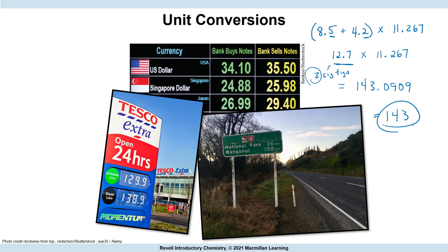The first two numbers that we added had two significant figures, and our other number had five, yet we ended up with three. That's okay, because it's based on uncertainty in the last digit. It was the one decimal place which then impacted what we could carry in our final answer.